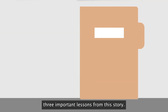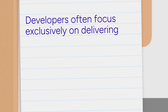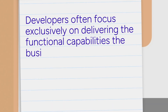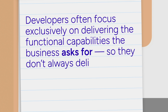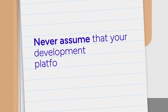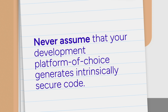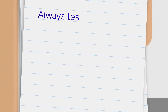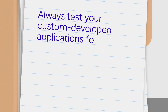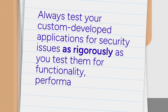Every company can learn three important lessons from this story. One, developers often focus exclusively on delivering the functional capabilities the business asks for, so they don't always deliver the security features the business needs. Two, never assume that your development platform of choice generates intrinsically secure code. Three, always test your custom-developed applications for security issues as rigorously as you test them for functionality, performance, and reliability.